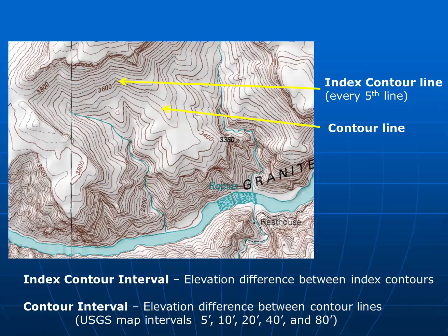In the United States, on the United States Geologic Survey maps, contour intervals are always 5 feet, 10 feet, 20 feet, 40 feet, or 80 feet. From this, we should be able to determine the three-dimensional elevation of any point on the map.